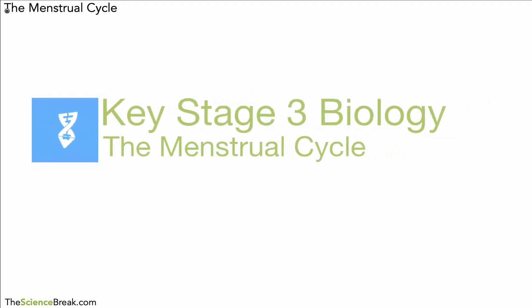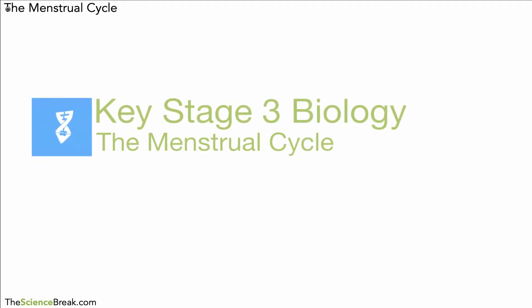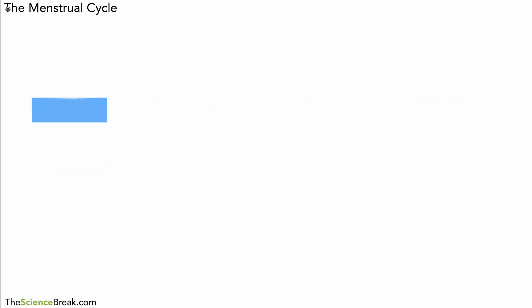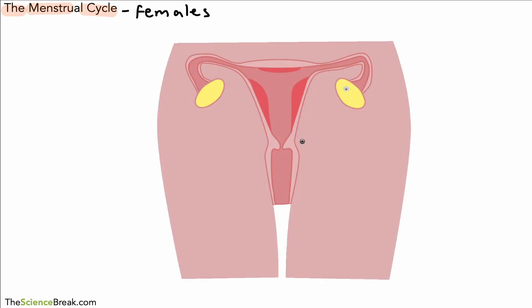Hello and welcome. Today we're looking at Key Stage 3 biology and it's the menstrual cycle as part of reproduction in humans. We're looking at the menstrual cycle, and this is always to do with females — not just humans but in mammals as well. To start us off, or as a little recap, let's have a look at the parts of the female reproductive system.